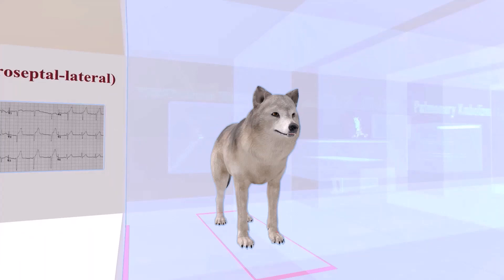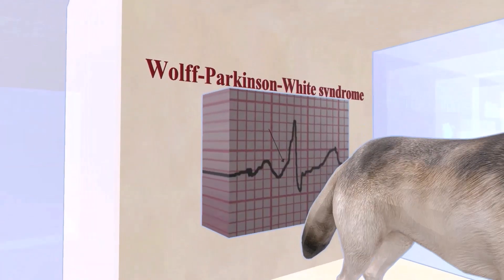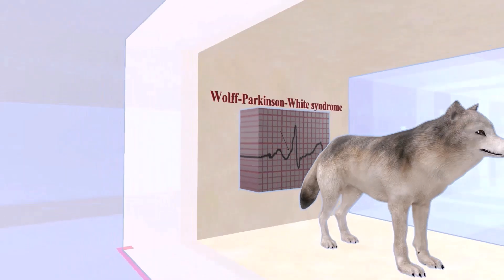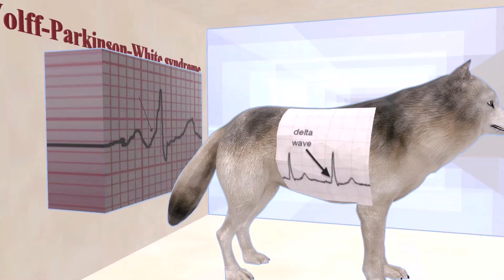Now we get to the white wolf — Wolf-Parkinson-White syndrome. In Wolf-Parkinson-White syndrome, we see a delta wave: a slight up-slanting of the QRS wave. This syndrome is due to an abnormally fast accessory conduction pathway from the atria to the ventricles, bypassing the rate-slowing AV node, leading to the ventricles partially depolarizing earlier. The treatment for Wolf-Parkinson-White syndrome is procainamide.